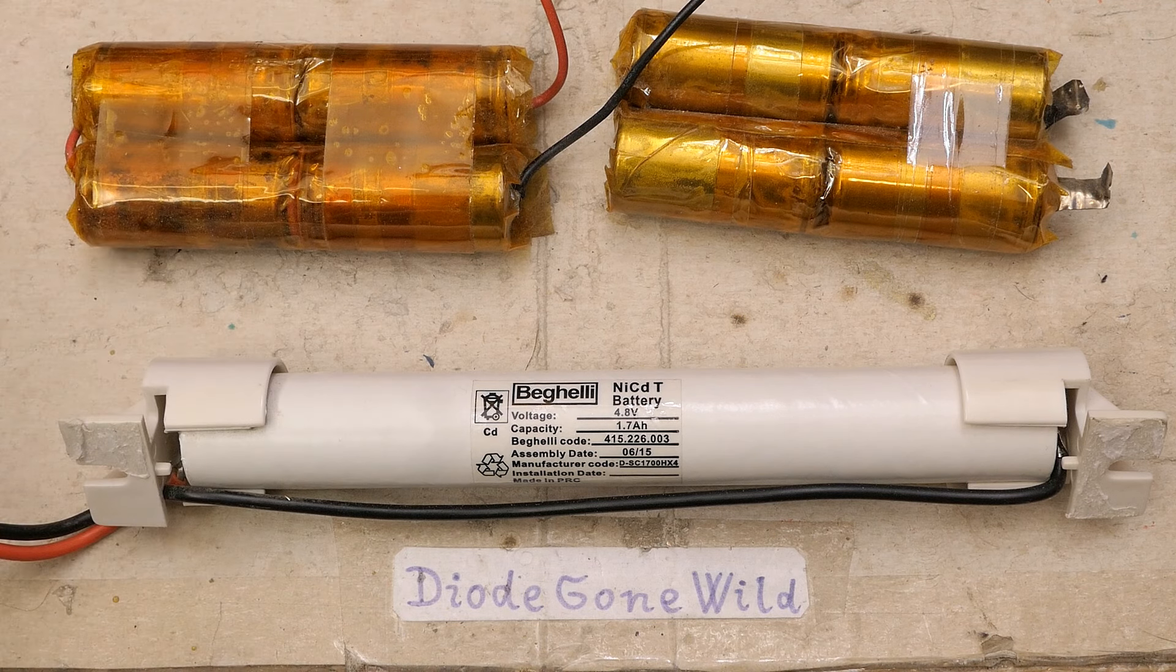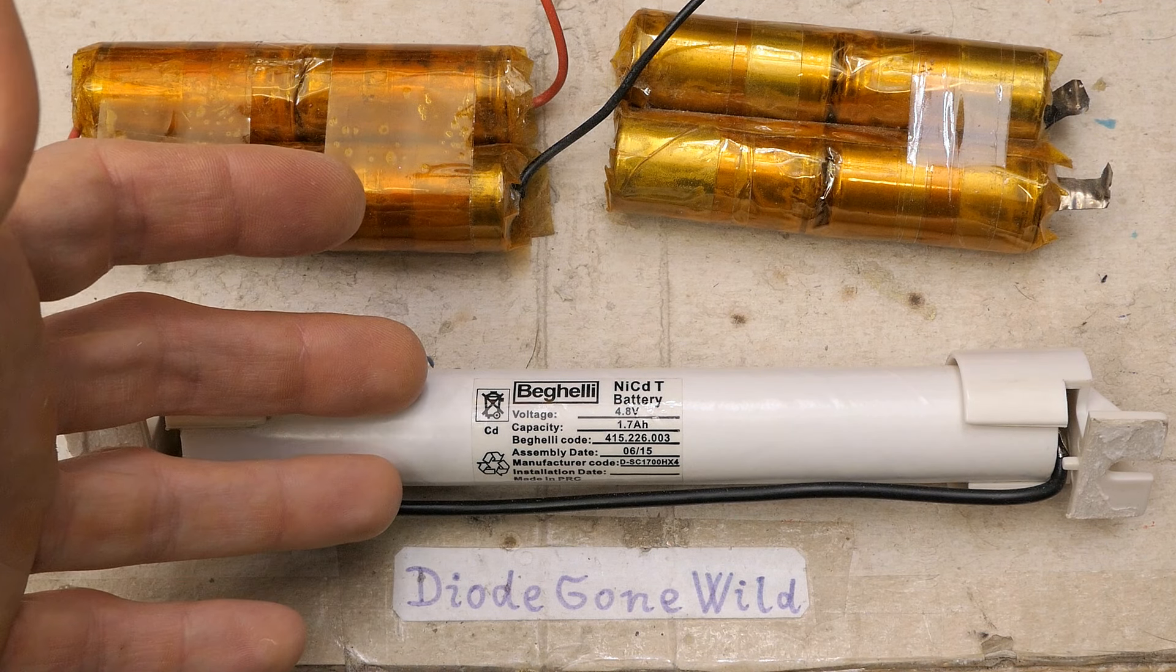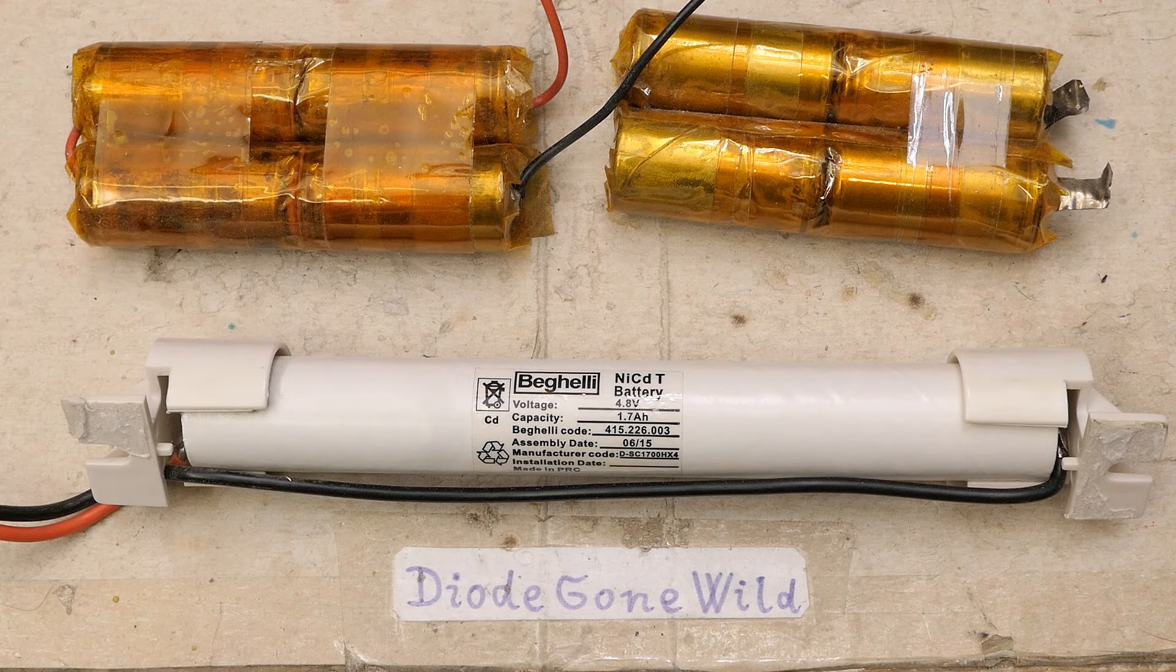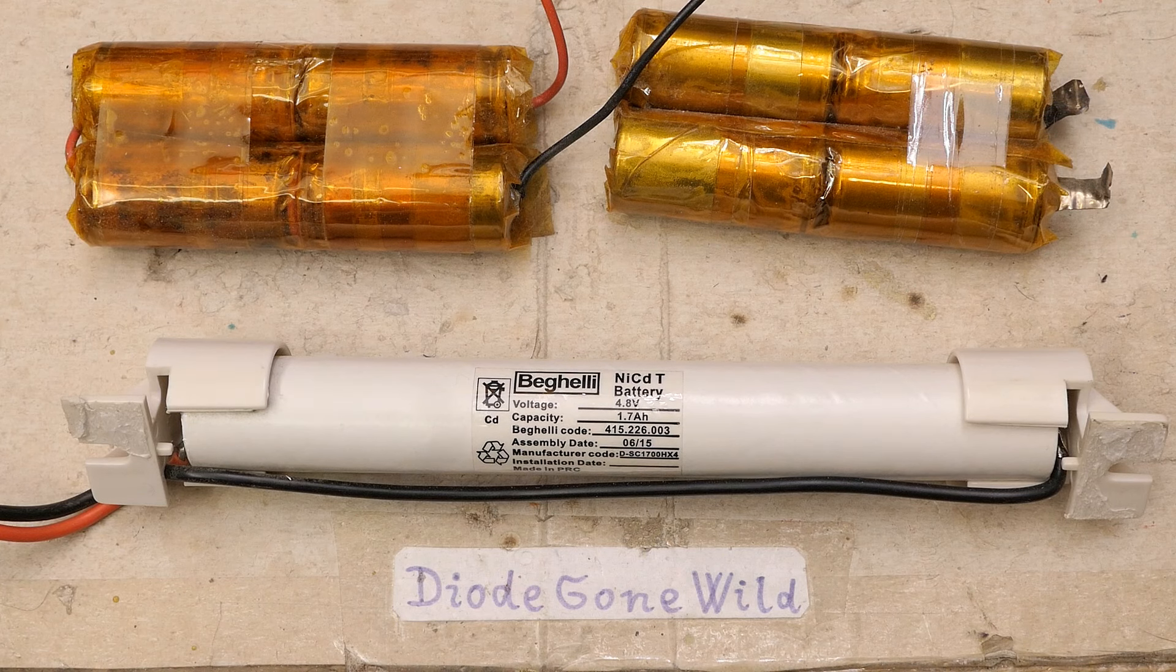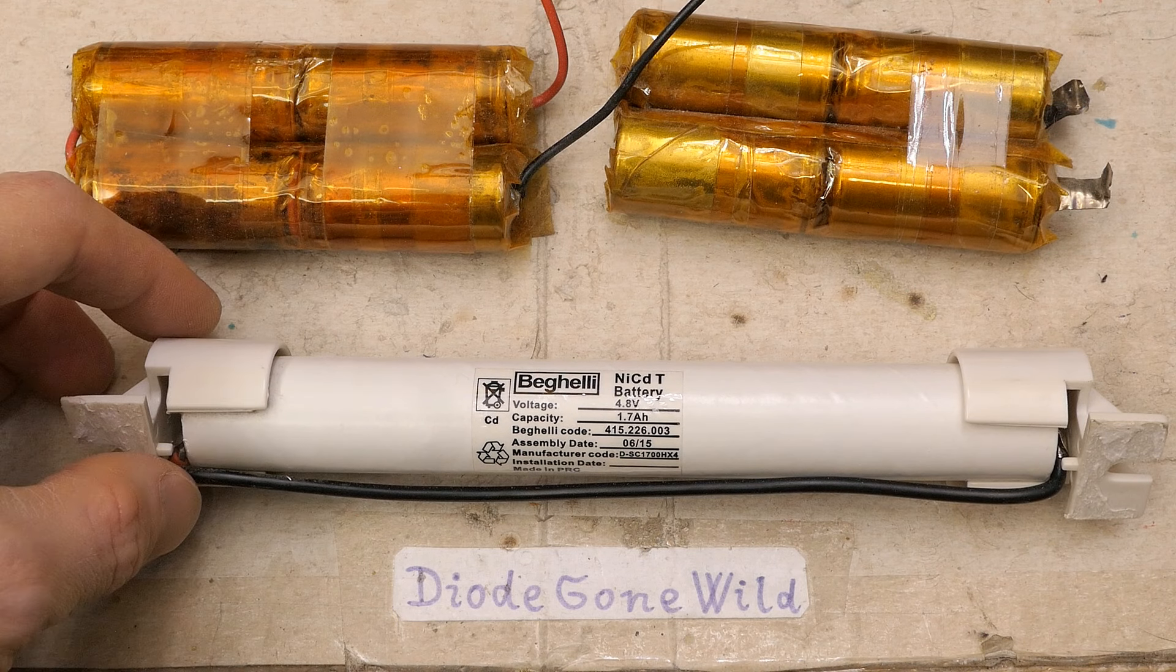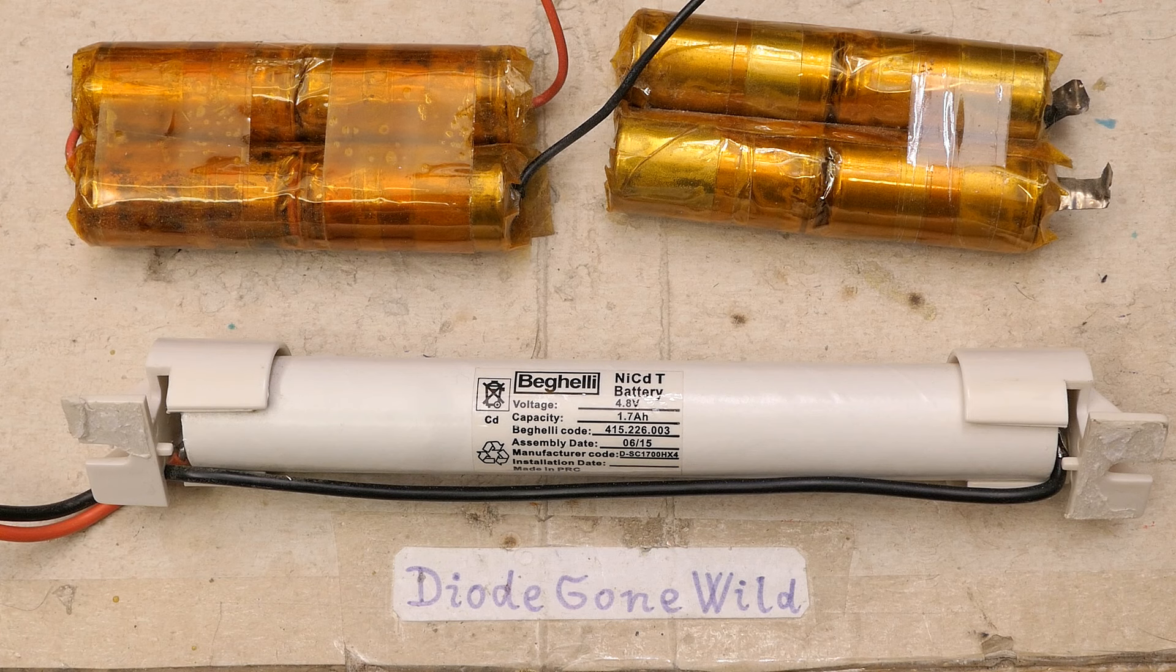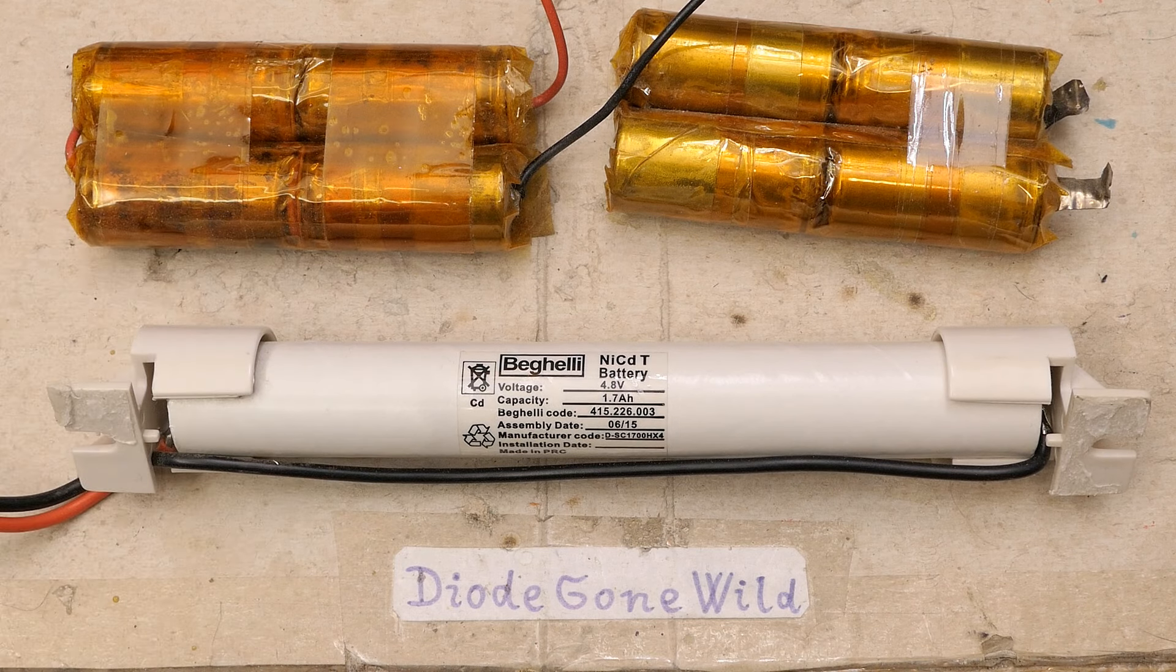Nickel-cadmium cells can still work after 20-30 years of sitting, but if you keep constantly trickle charging them to keep them ready for use, they wear out over time. The fixture was probably constantly keeping it fully charged and the backup inverter was connected 24 hours a day for probably eight years.